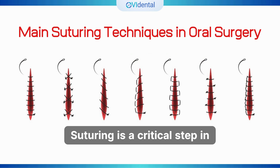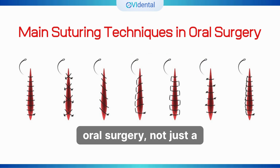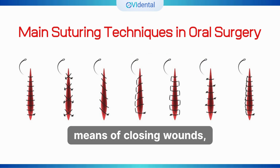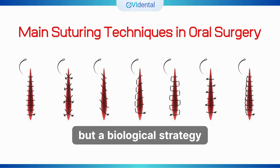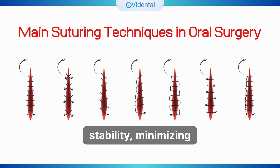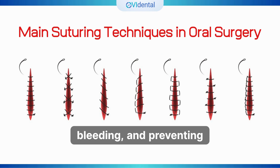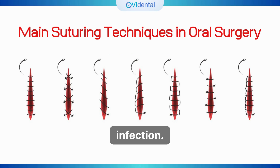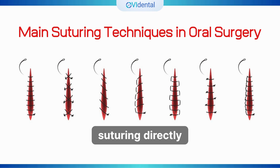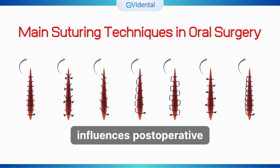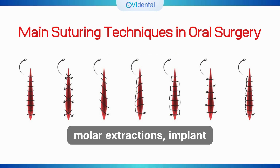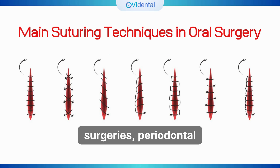Suturing is a critical step in oral surgery, not just a means of closing wounds, but a biological strategy for promoting proper healing, maintaining flap stability, minimizing bleeding, and preventing infection. The effectiveness of suturing directly influences postoperative outcomes, especially in procedures such as third molar extractions, implant surgeries, periodontal regeneration, and soft tissue grafts.